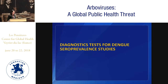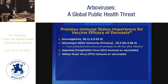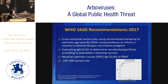Now I'm going to jump to diagnostic tests for dengue and seroprevalence studies. We've heard a lot today about the dengue vaccine and its efficacy in seronegatives versus those with monotypic immunity, and whether you're vaccinated with yellow fever or Japanese encephalitis. Then came the SAGE recommendations in 2017. They recommended a cross-sectional serosurvey using school-based sampling to estimate age-specific dengue virus seroprevalence to inform countries about national vaccination programs. In that recommendation booklet, we recommended evaluating the IgG ELISA to determine sensitivity and specificity for the population receiving the vaccine, and performing receiver-operator curves with IgG and PRNT as your gold standard, looking at at least 100 to 200 specimens — this is showing ROC analysis from a study we did in 2013.